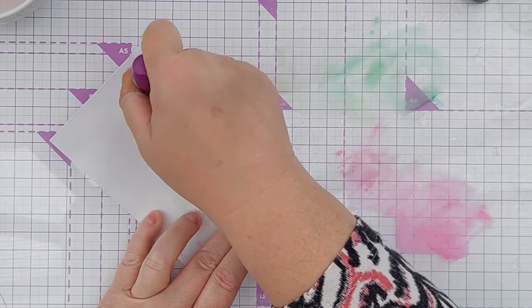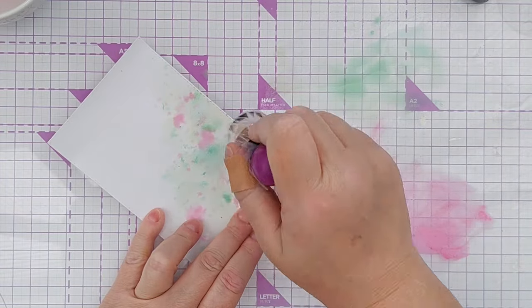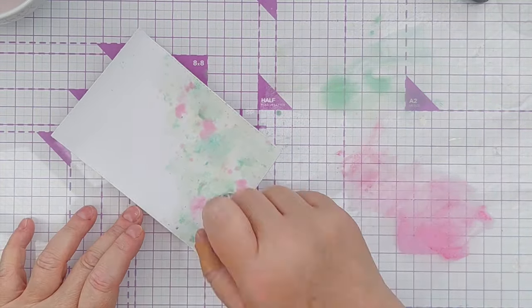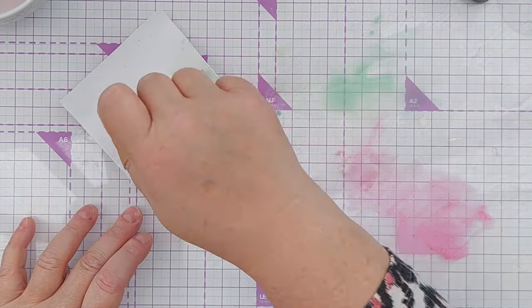Once that first layer of diffuse color was down, I dried the panel with my hairdryer, and then I used my mini smusher to smush on some of the green.